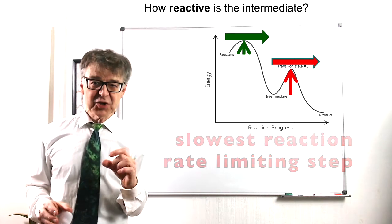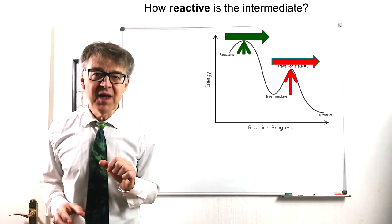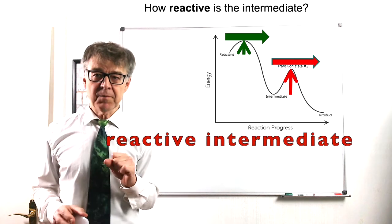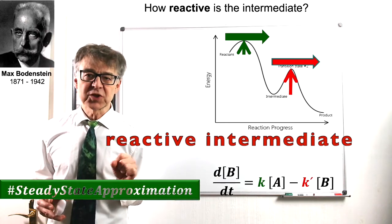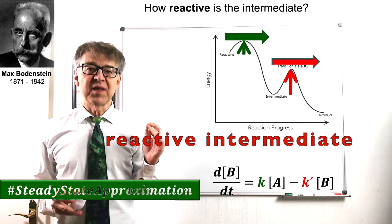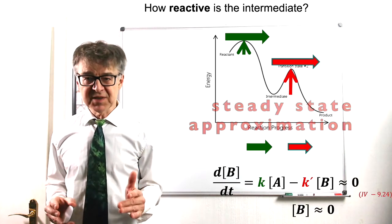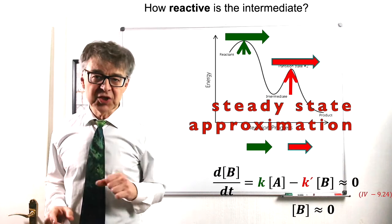If the green reaction is much slower than the red one, the intermediate is said to be reactive. Here, the steady-state approximation of Bodenstein applies. The intermediate product has a very low concentration that does not change over time.